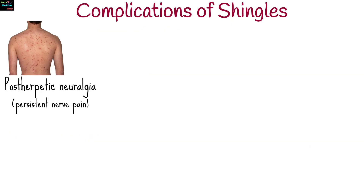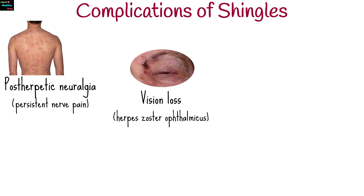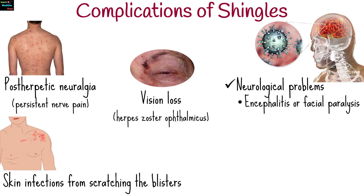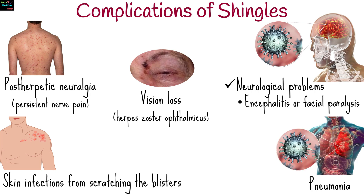Complications of shingles include postherpetic neuralgia, which is persistent nerve pain after the rash heals; vision loss if shingles occurs in or around the eye, also known as herpes zoster ophthalmicus; neurological problems such as encephalitis or facial paralysis; skin infections from scratching the blisters; and rarely pneumonia or other serious complications, especially in individuals with weakened immune systems.